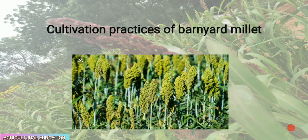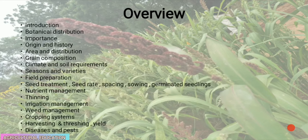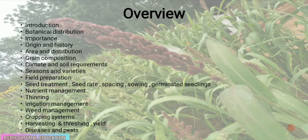This lecture covers cultivation practices of barnyard millet, including botanical distribution, importance, origin and history, area and distribution, grain composition, climate and soil requirements, seasons and varieties, field preparation, seed treatment, seed rate, spacing, sowing, germinated seedlings, nutrient management, thinning, irrigation management, weed management, cropping systems, harvesting, threshing, yield, diseases, and pests of barnyard millet.